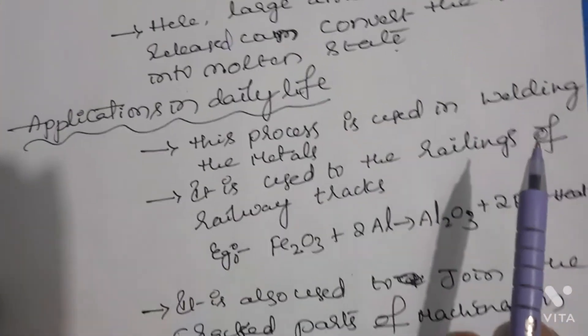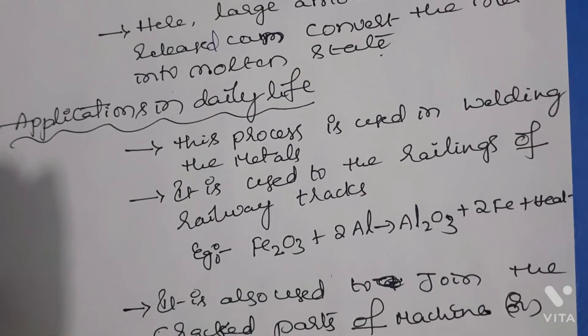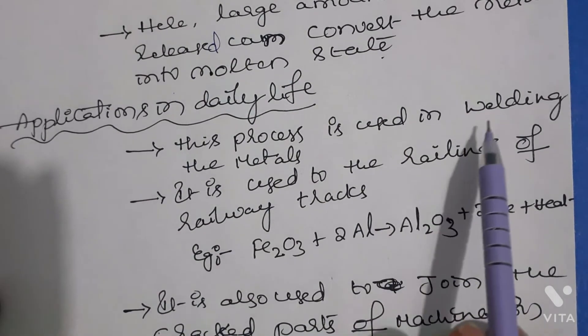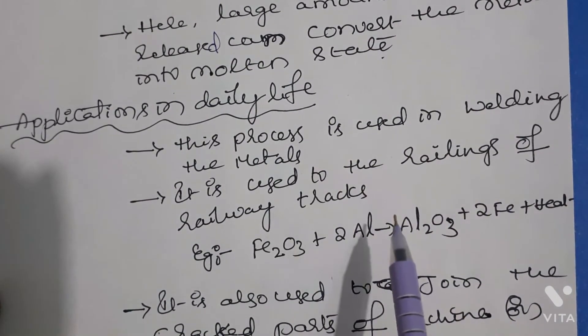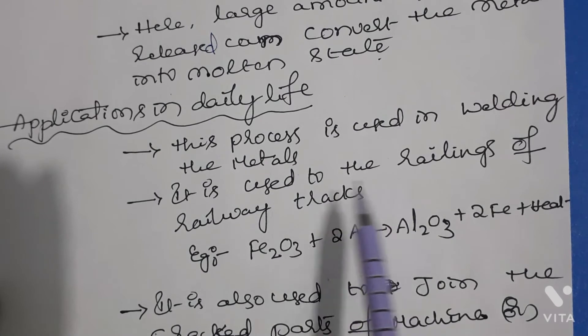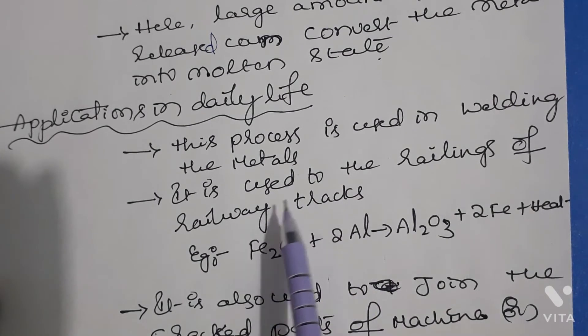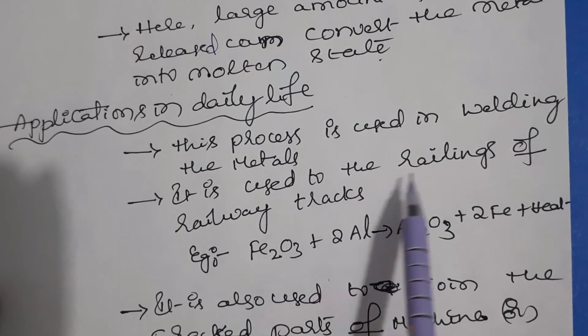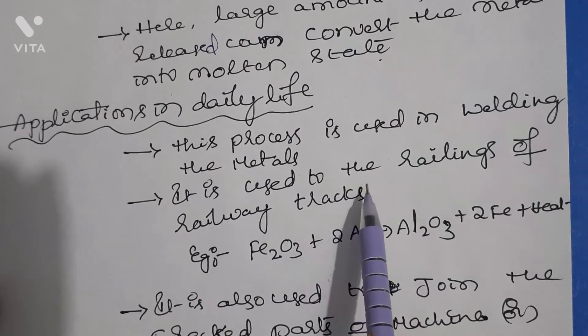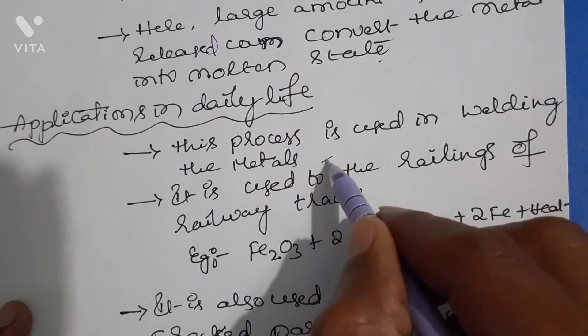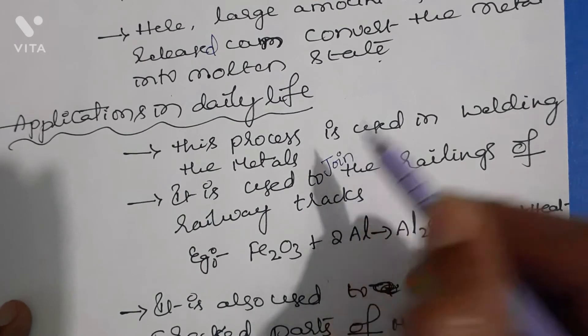Now, what are the applications of thermite process in daily life? This process is used in welding the metals. In welding, this process is used. It is used to join the railings of railway tracks students.